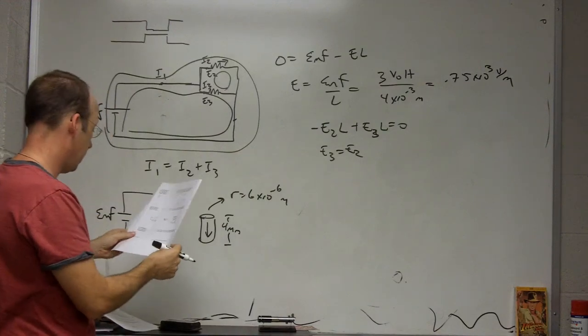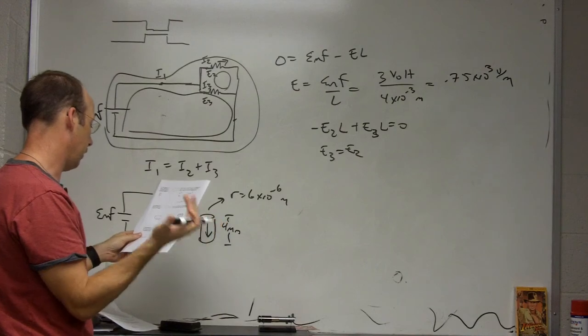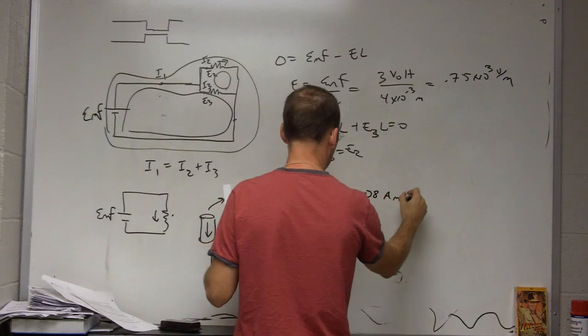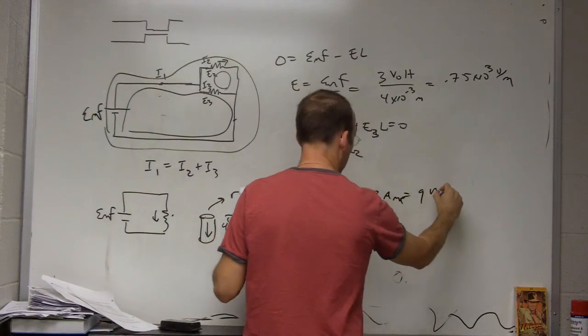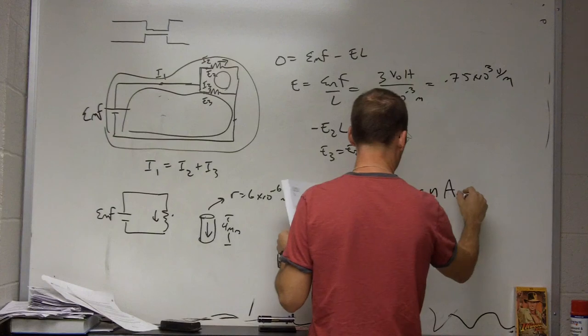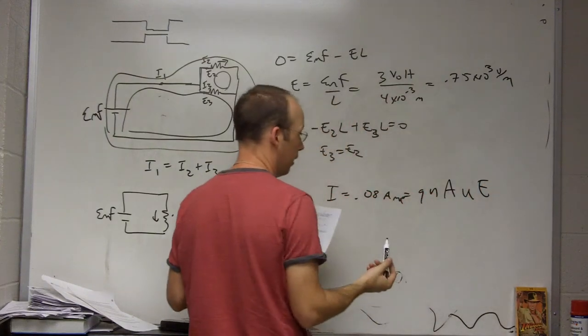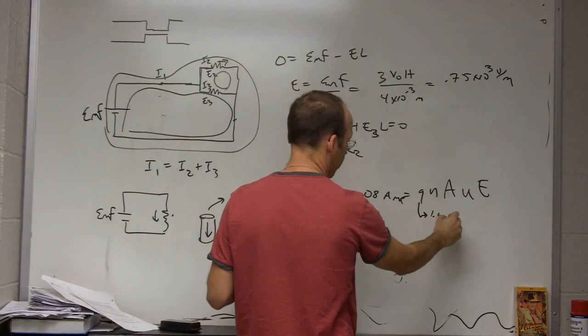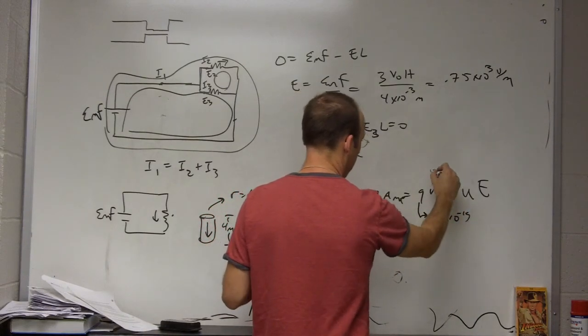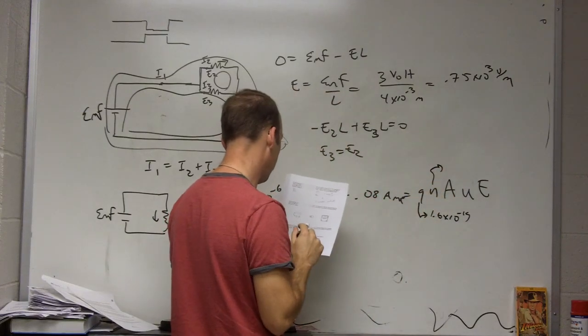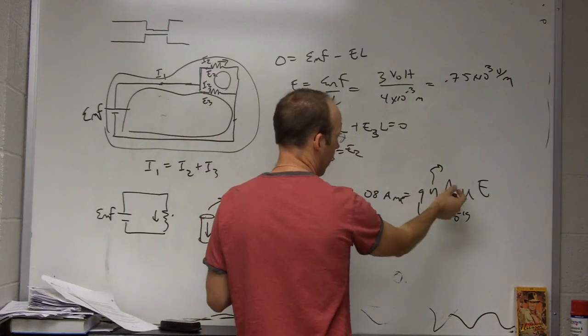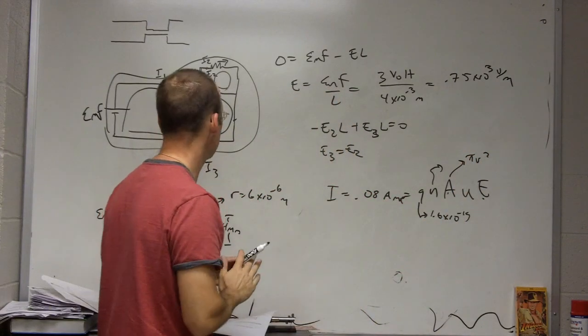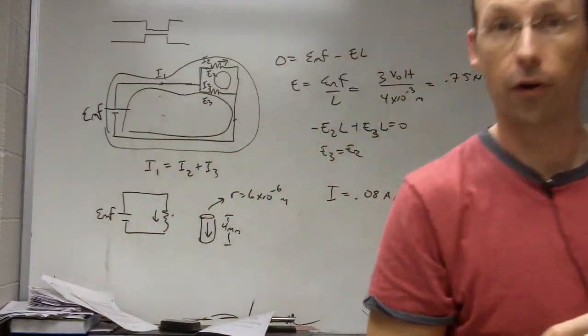Okay, the last part says, how would you find electron mobility? If they give you the current of I equals 0.08 amps equals Q, N, A, U, E, find the electron mobility. Okay, so this is one, this is the charge of electron, 1.6 times 10 to the negative 19th. This is the charge carrier density which they give you. A, you could find, this is just going to be pi R squared. And you just found E. So, that's it. Now I can answer my phone call.